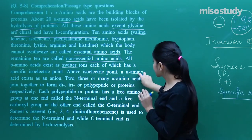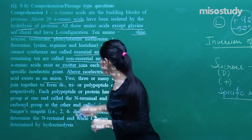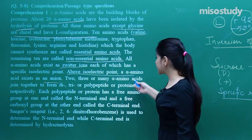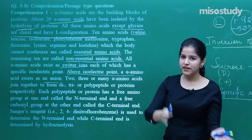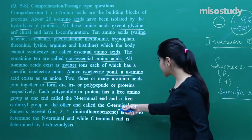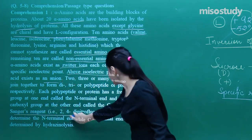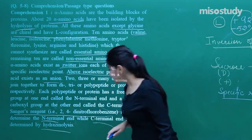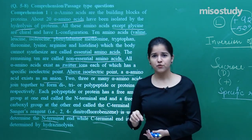Above the isoelectric point, the alpha amino acid exists as an anion, which means below the isoelectric point it will exist as a cation. Two, three, or many alpha amino acids form di-, tri-, or polypeptides. Each polypeptide has a free amino group at the N-terminal end and the other has the C-terminal. Sanger's reagent is used for determination of the N-terminal, while hydrazinolysis is used for the C-terminal.